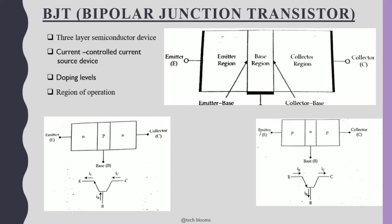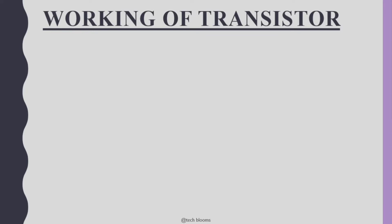Next is the operating region. The active region of operation is required for AC amplification, and for that purpose you require proper DC biasing of the BJT.